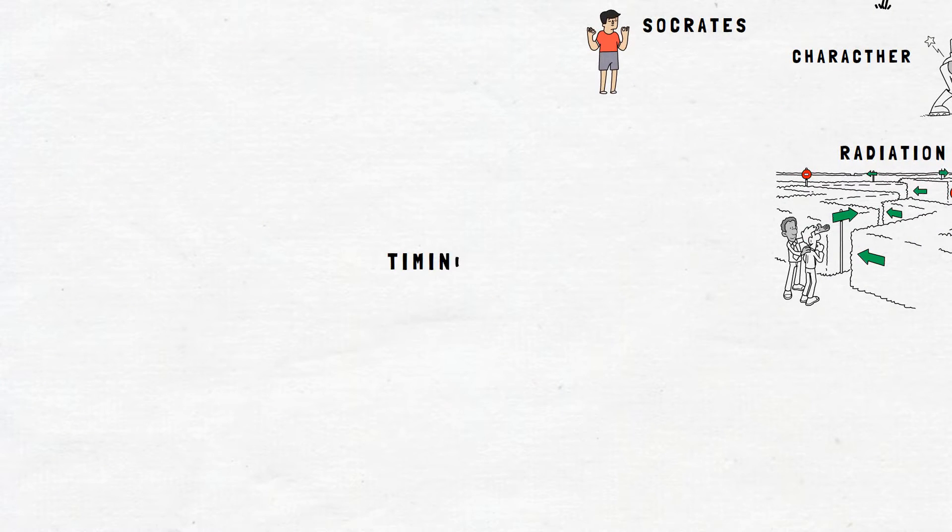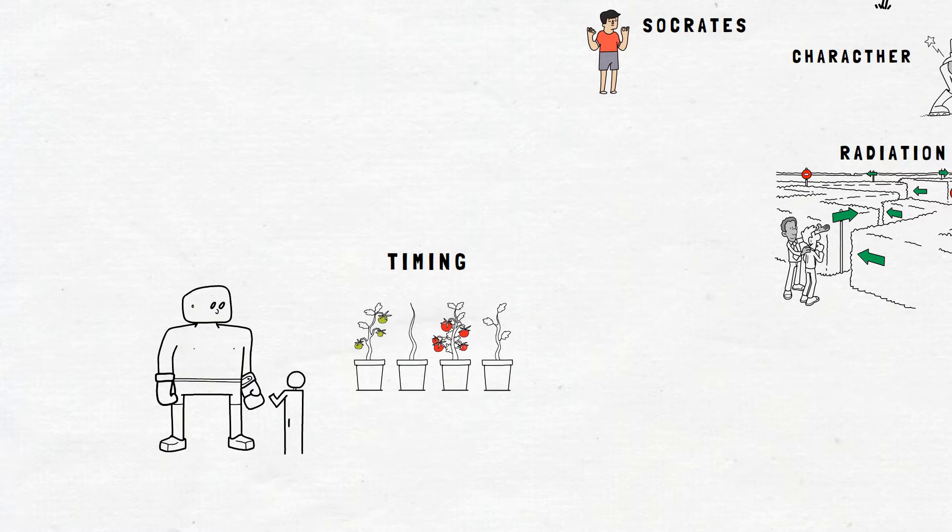T for time. Any change of the rash or the lesion over time? Such as any changes to the size? The shape? The border? The colour? The texture? Is it hot? Cold?